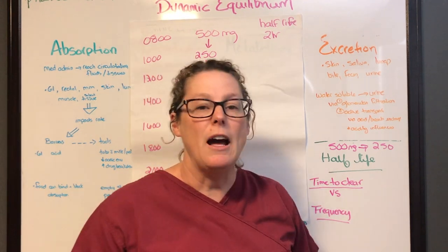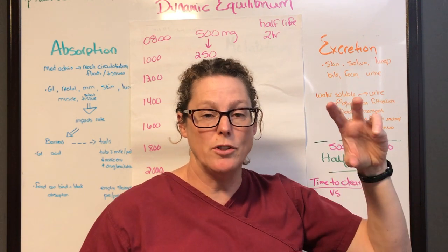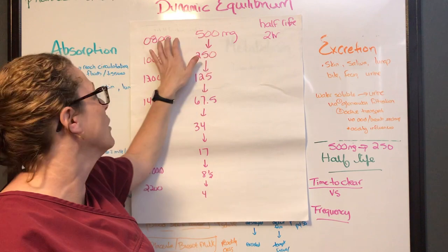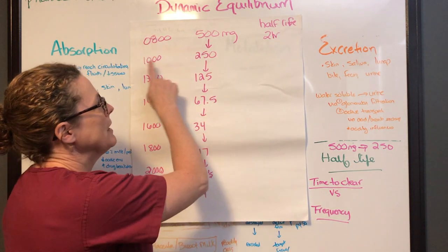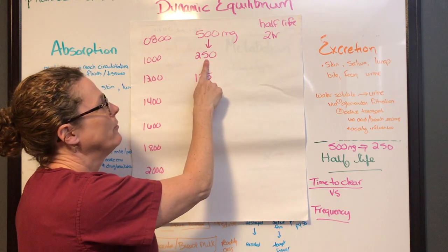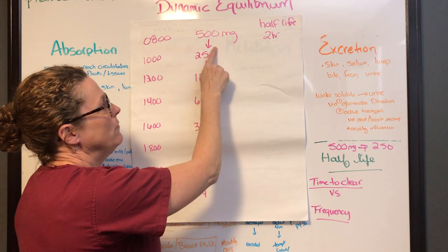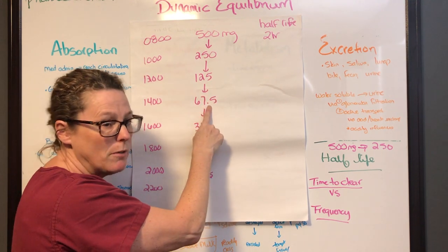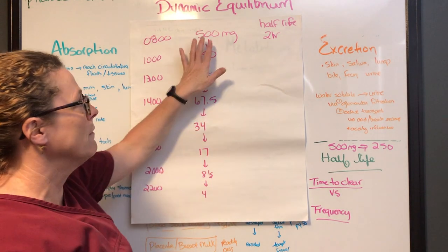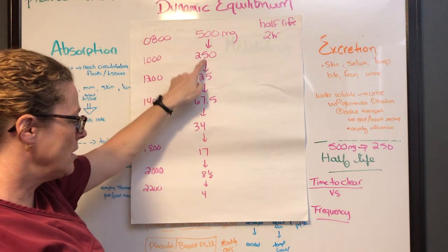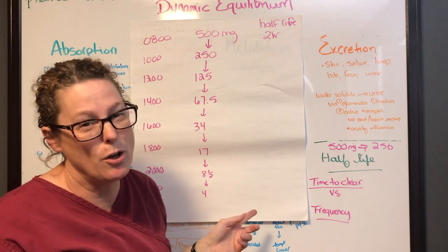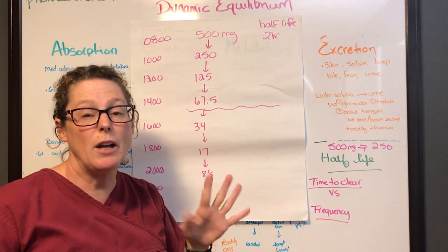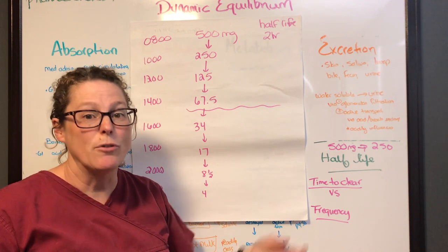This takes us to the concept of half-life. Half-life is the time it takes for the amount of a drug to go from one concentration down to half of that concentration. For example, if you take 500 milligrams of a medication at 8 o'clock and it has a half-life of two hours, by 10 o'clock it drops to 250 milligrams. By 12 o'clock it reduces to 125, and in another two hours it becomes 62.5 milligrams — and so on. A 500 milligram dose with a two-hour half-life still has medication in the system at midnight, but not at a therapeutic level.